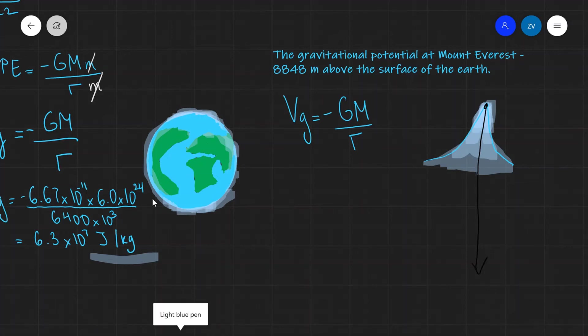Let's start filling in some of the quantities in the equation. Minus G, that will be minus 6.67 times 10 to the power of minus 11. The mass of the Earth is 6.0 times 10 to the power of 24. And now for my distance r, I'm going to be using the radius of the Earth plus the height of Mount Everest.